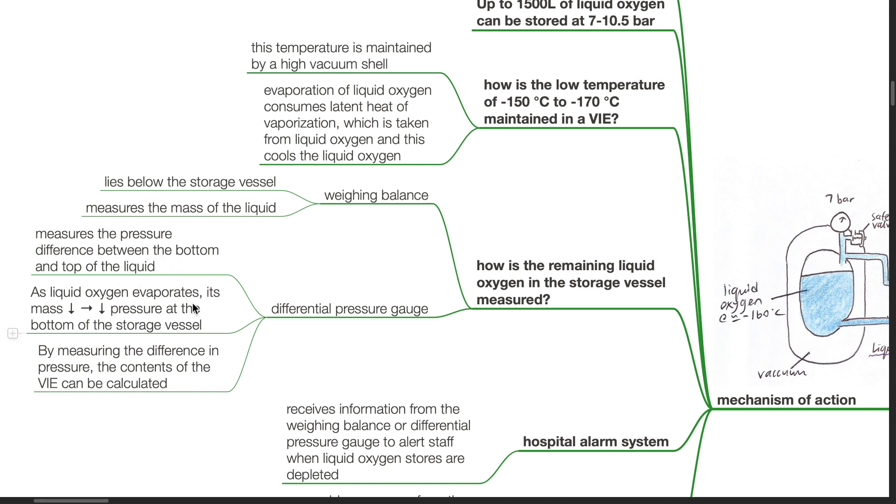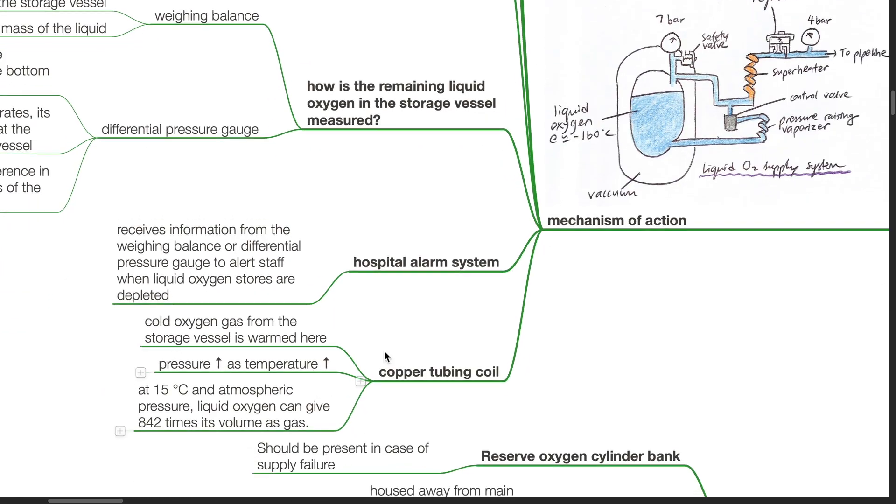As liquid oxygen evaporates, its mass decreases and the decrease in pressure at the bottom of the storage vessel is detected. By measuring the difference in pressure, the contents of the VIE can be calculated.